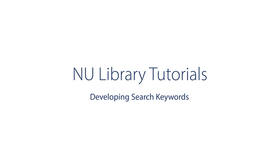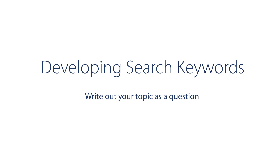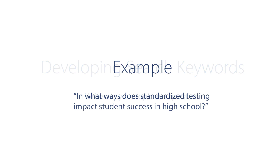To develop keywords, first try writing out your topic into a neutral question. For example, if you are researching standardized testing in high schools, you could write a question like this: In what ways does standardized testing impact student success in high school?